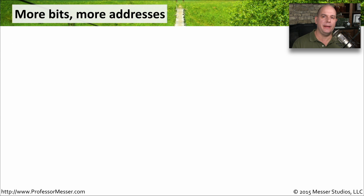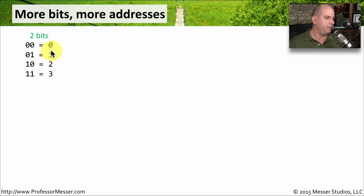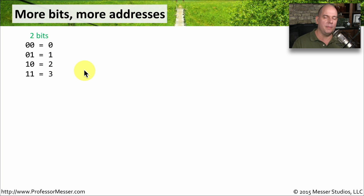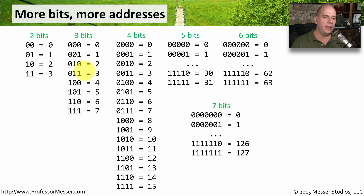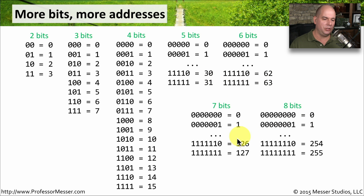We've been working with these 8-bit octets, but of course you can have different sizes of calculations. When you start getting into subnetting, you'll find certain numbers of bits to work with. For example, with just two bits there are only four ways to turn these bits on and off: 00 is 0, 01 is 1, 10 is 2, 11 is 3. As you work through calculations with three bits, four bits, all the way through eight bits, the maximum number of addresses you can have in a grouping will be based on the number of bits. In a later video, we'll do a lot more IP subnetting.